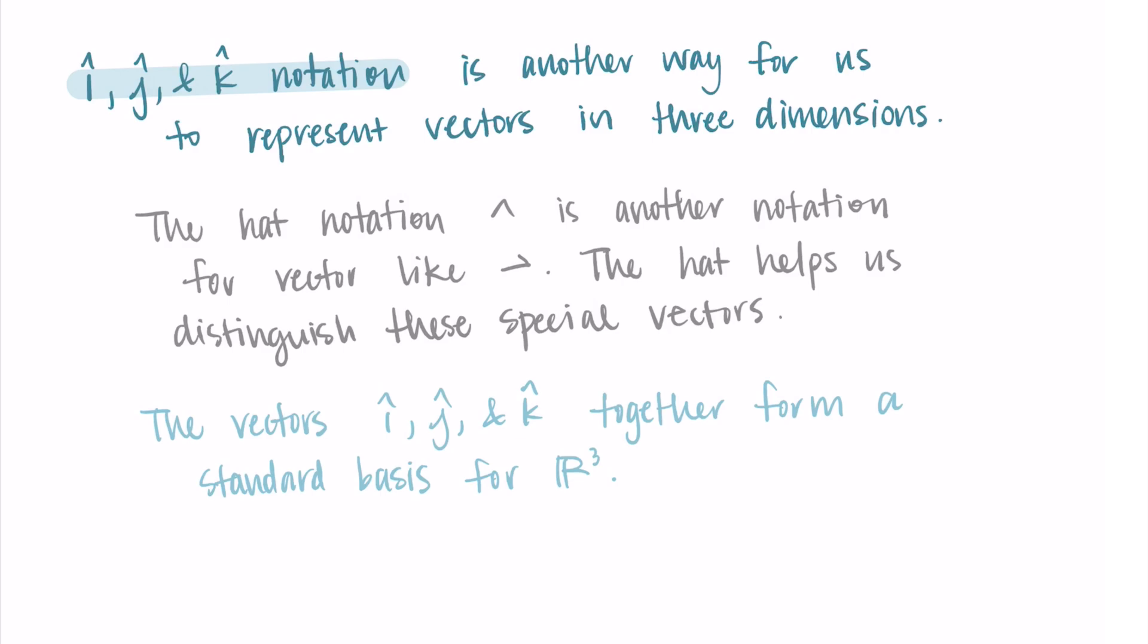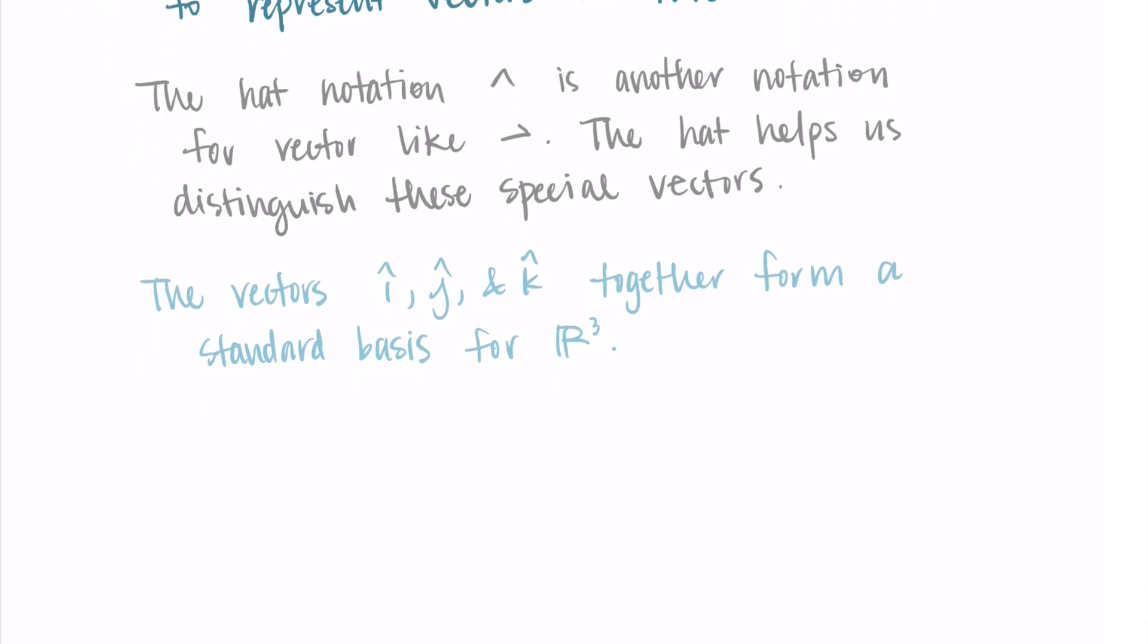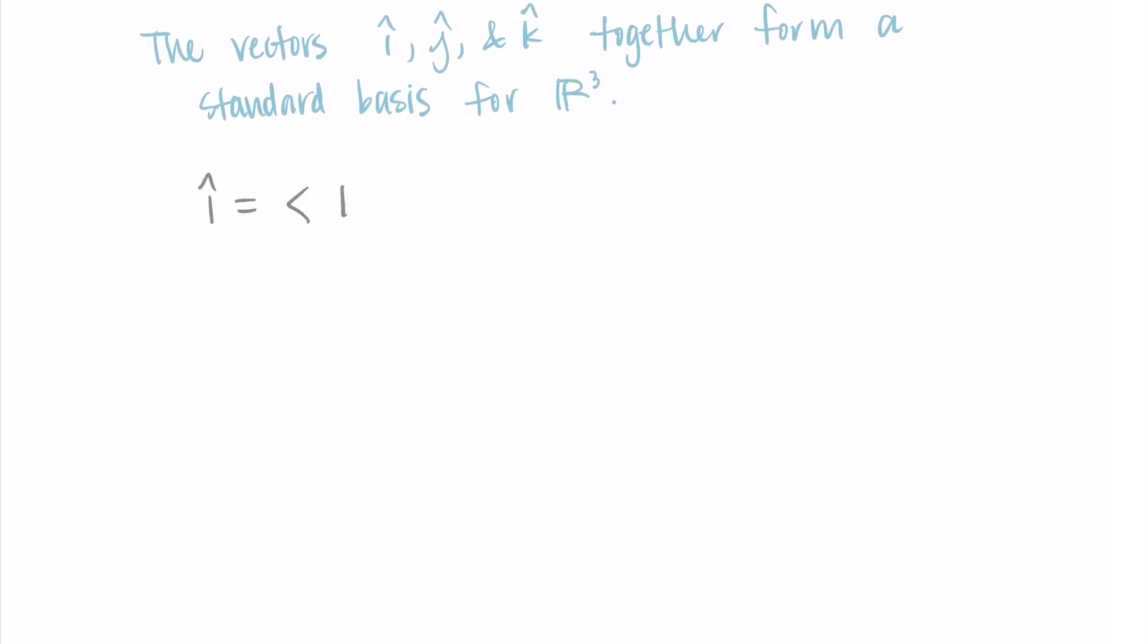And this happens because of how i, j, and k are defined. We define i hat to be the vector <1, 0, 0>. So in standard position, this is a vector starting at the origin and pointing to the point 1, 0, 0. So it points directly along the x-axis for a length of 1. Then the j vector is <0, 1, 0>, and it lies directly on the y-axis. Again, having a length of 1, it starts at the origin and goes to the point 0, 1, 0. And lastly, the k vector goes <0, 0, 1>, and it lies along the z-axis going straight up for a length of 1.